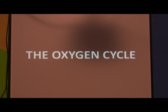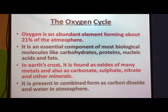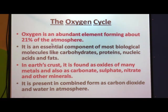Oxygen is an abundant element forming about 21 percent of the atmosphere — 20.95 percent exactly. We discussed that 78 percent of air is nitrogen, 21 percent is oxygen, and the remaining 1 percent includes carbon dioxide, inert gases, dust, water vapor, etc. So 21 percent of the air is made up of oxygen and it is an abundant element.